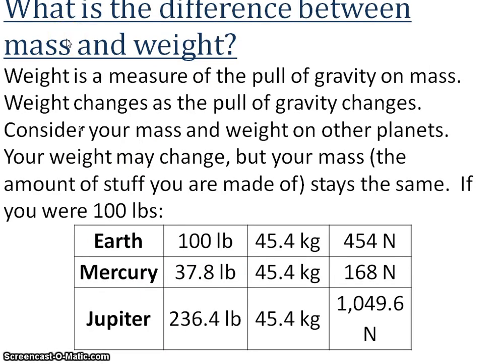Often there's some confusion about what is mass and what is weight. In science, we have to be very specific about these two words and how they're used. Weight is a measure of the pull of gravity on mass. For weight, we might use pounds, and we might use newtons. Weight changes as the pull of gravity changes. For that reason, your weight will change on different planets because different planets have different pull because of their mass.